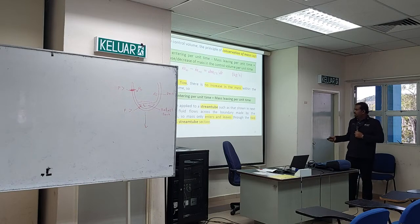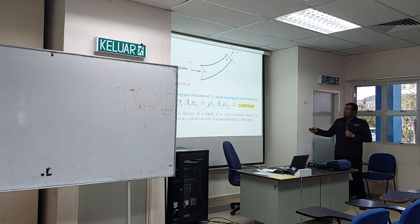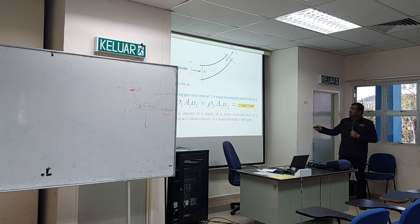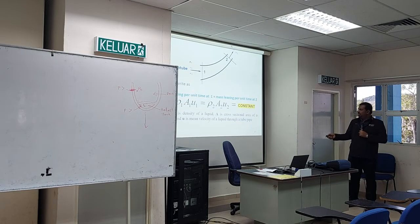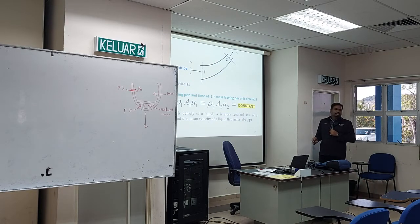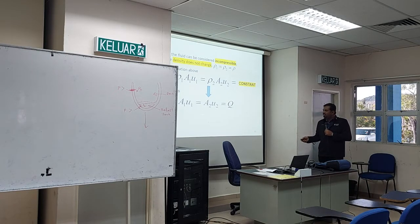The continuity equation can be applied to a stream tube — mass enters and leaves through the two ends. Taking two points, the formula is: ρ₁A₁u₁ = ρ₂A₂u₂ = constant. For incompressible flow, since density doesn't change, this simplifies to: A₁u₁ = A₂u₂ = Q.